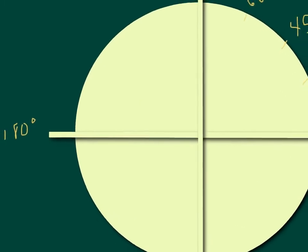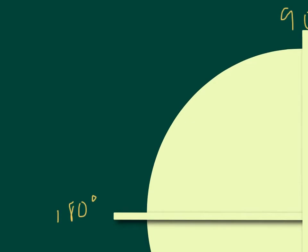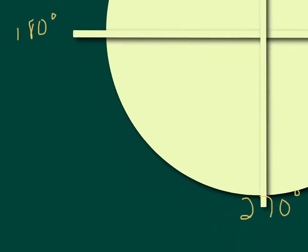If we go into quadrant two, what is 30 degrees less than 180? Well, it's 150. What is 45 degrees less than 180? It's 135. And what's 60 degrees less than 180? That is going to be 120 degrees. Then we'll jump into quadrant three. What is 30 degrees more than 180? It's going to be 210 degrees. What's 45 degrees more than 180? That would be 225 degrees. And what's 60 degrees more than 180? That's going to be 240 degrees.